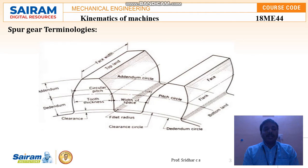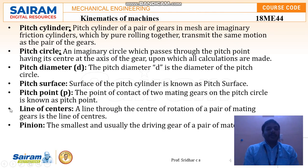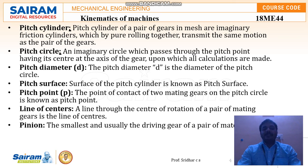Now we are going to discuss the definitions. The pitch cylinder of a pair is what we call the imaginary friction cylinders that roll together to transmit the same motion. The pitch circle is an imaginary circle which passes through the pitch point, having its center at the axis of the gear — upon which all calculations are based.